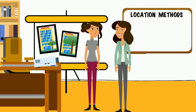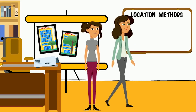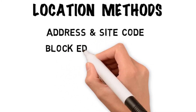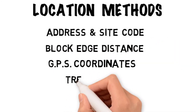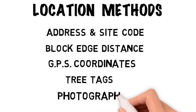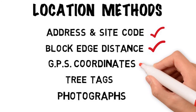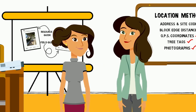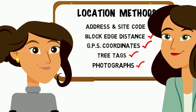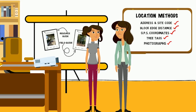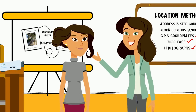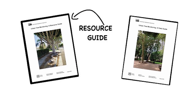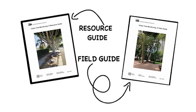Having reviewed all these location methods, the most important point is this: don't rely on just one. Use at least two complementary location methods for every tree. None of these methods are fail-safe, and using more than one method can help ensure that future field crews can find the right tree. Take some time to decide which methods are best for your project, given the sites you're working in, your field equipment, and the inventory software systems you're already using. Location is the most crucial piece of information for urban tree monitoring — if you can't find the tree, you can't record information about how it's changing over time. For more information, see the Urban Tree Monitoring Field Guide and Resource Guide.